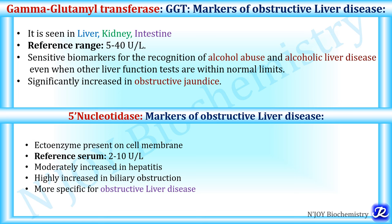The second marker of obstructive liver disease or cholestasis is gamma-glutamyl transferase (GGT). It is found in the liver, kidney, and intestine, with a reference range of about 5 to 40 units per liter. GGT is a sensitive biomarker for recognition of alcohol abuse, increased even when other liver function tests are within normal limits. It is also significantly increased in obstructive jaundice. 5'-nucleotidase is also a marker of obstructive liver disease, present as an ectoenzyme on the cell membrane with a reference range of 2 to 10 units per liter. It is moderately increased in hepatitis but highly increased in biliary obstruction.